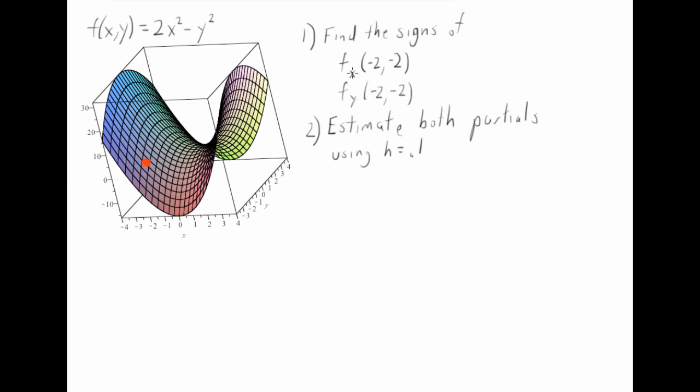So let's think about this first. We are increasing x. So if you want to think about it, that means we are following this line right here. And we're thinking about what's happening to our function. Well, our function is decreasing. And since our function is decreasing, we would expect the sign of this partial derivative to be negative.